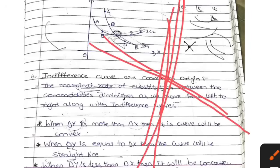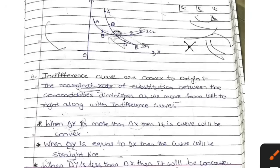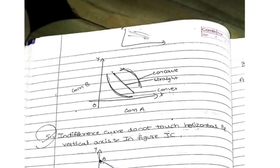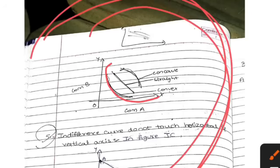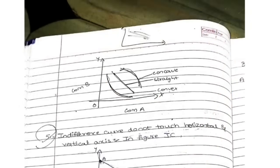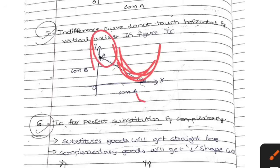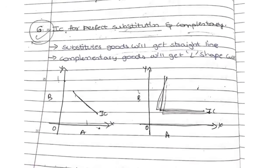Third: indifference curves cannot intersect each other — two or three indifference curves should never cross. Fourth: indifference curves are always convex to the origin — they should always be in a C-shape, not a reverse-C; that is called convex to the origin. Fifth: the indifference curve should not touch any horizontal or vertical axis — it should always float in the middle of the graph, not touching the X-axis or Y-axis. Sixth: indifference curves always involve substitute and complementary goods. These are the six properties of the indifference curve.